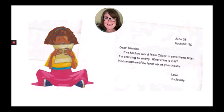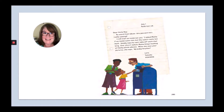June 28th, Rock Hill, South Carolina. Dear Tamika, I've had no word from Oliver in 17 days. I'm starting to worry — what if he is lost? Please call me if he turns up at your house. Love, Uncle Ray. July 1st, Redcrest, California. Dear Uncle Ray, no word from Oliver. Are you sure he's really coming? I still wish we could see you. I asked Mama if we could come visit, but she said it costs too much. Daddy says he can't take off work that long. Ever since I asked, Mama keeps looking at family photo albums. When she sees your pictures, she says, 'My baby brother.'